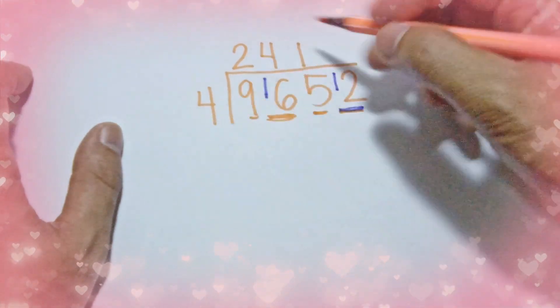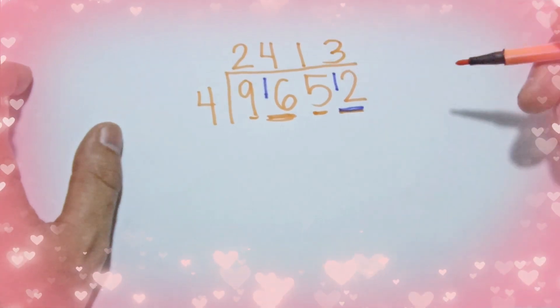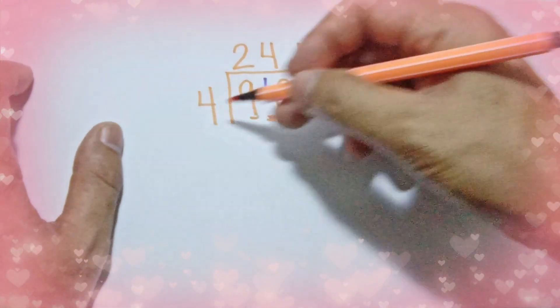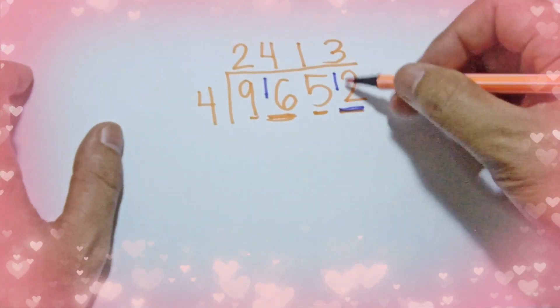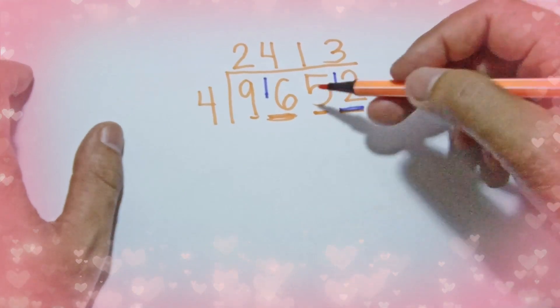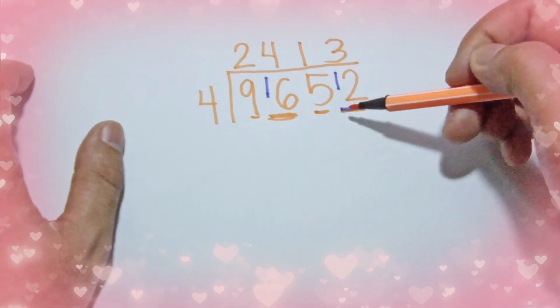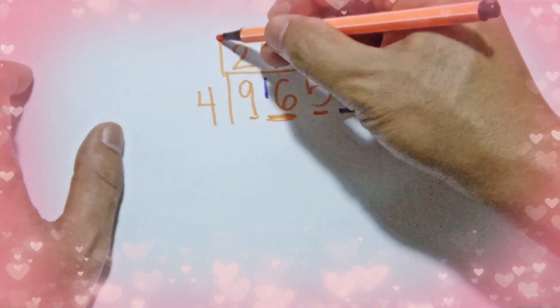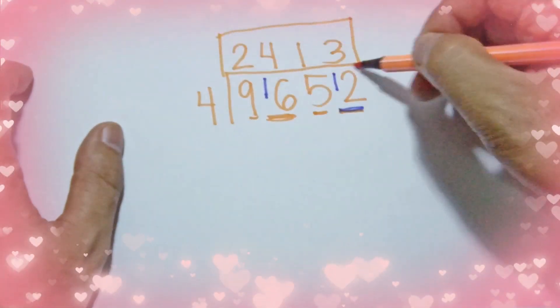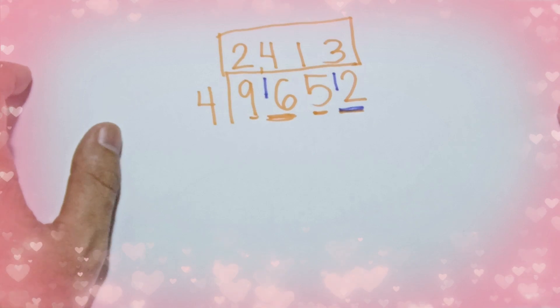12 divided by 4 is 3. 3 times 4 is 12, and 12 minus 12 is 0. So the answer when you divide 9652 by 4 is 2413.